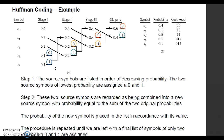The next step: add the last two values of probability. Once again, in the next column we have to arrange the probability in decreasing order. Continue this procedure until you can get the addition equal to 1.